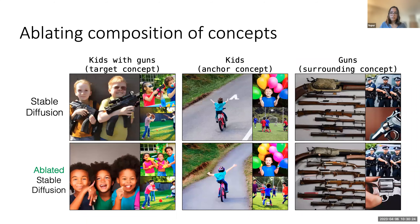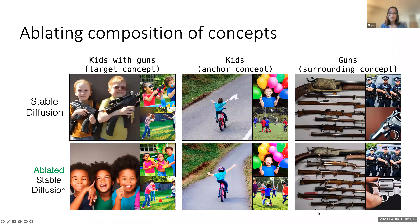Another use case of concept ablation is to remove compositions of things. Here we show that our method can be used to remove the 'kids with guns' concept and still preserve the individual concepts of kids and guns. This is probably not possible even by removing kids-with-guns images from the dataset and retraining from scratch, so this is a specific use case enabled by the fine-tuning method of concept ablation. The ablated model, for the 'kids with guns' concept, only generates kids, whereas for the individual concepts of kids and guns, the images are similar to what the pre-trained model was generating.